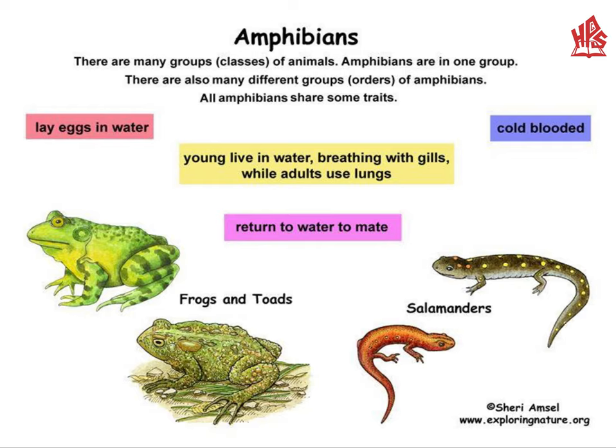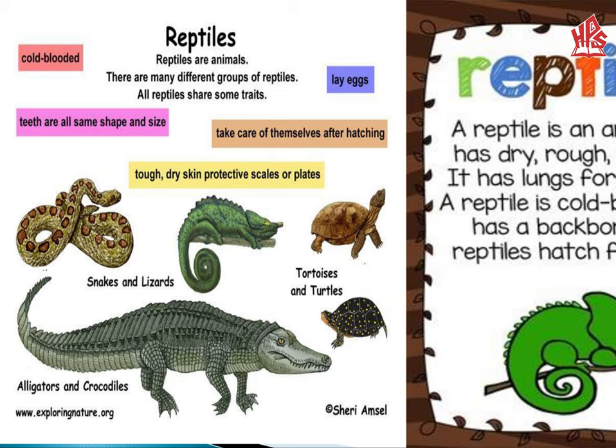There are many groups and classes of animals, but all amphibians belong to the same group which shares the same features: they lay eggs in water, they are cold-blooded, and young amphibians live in water. As young, they breathe through gills, but adults have lungs. Some examples of amphibians are frogs, toads, and salamanders.